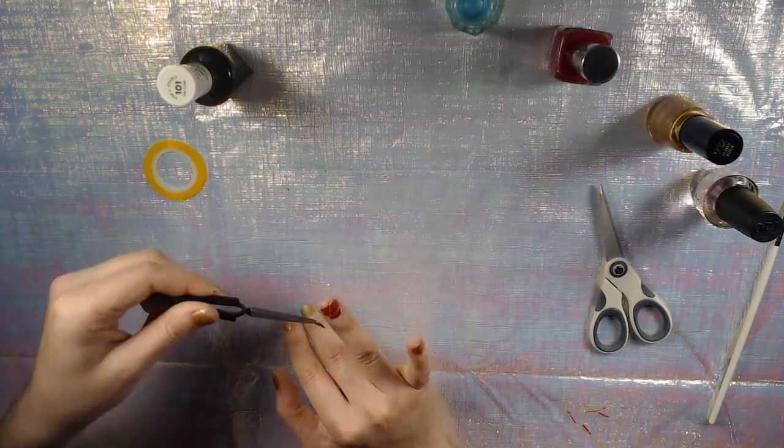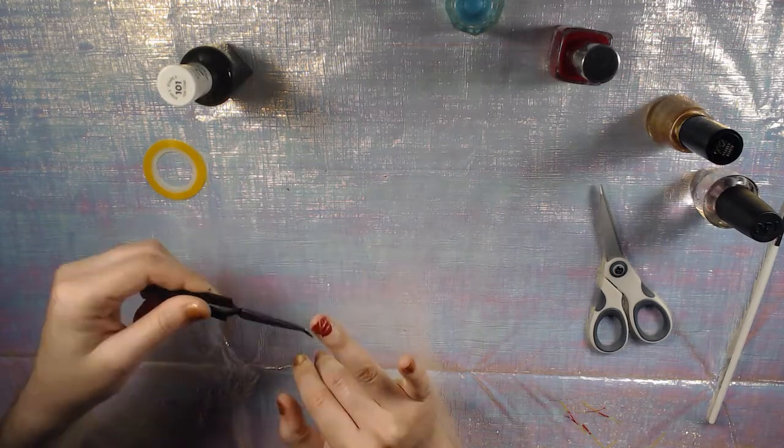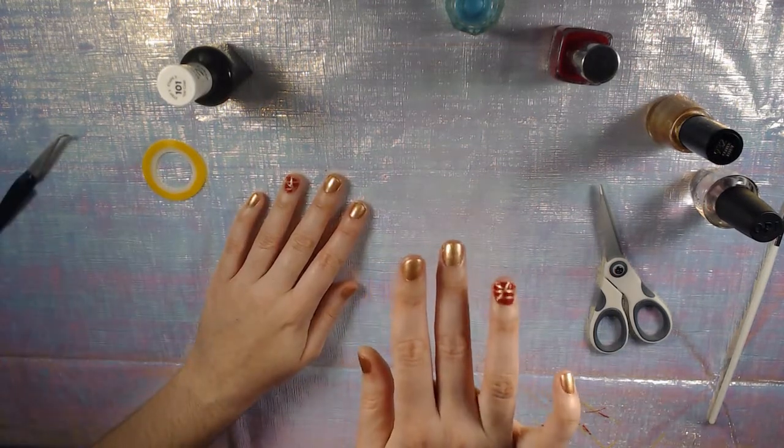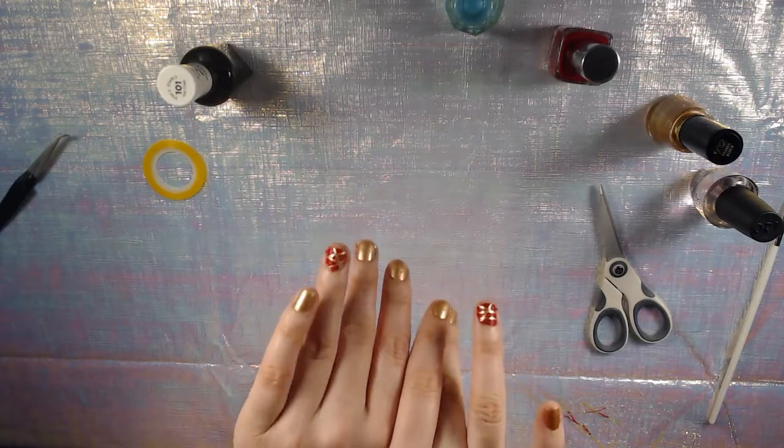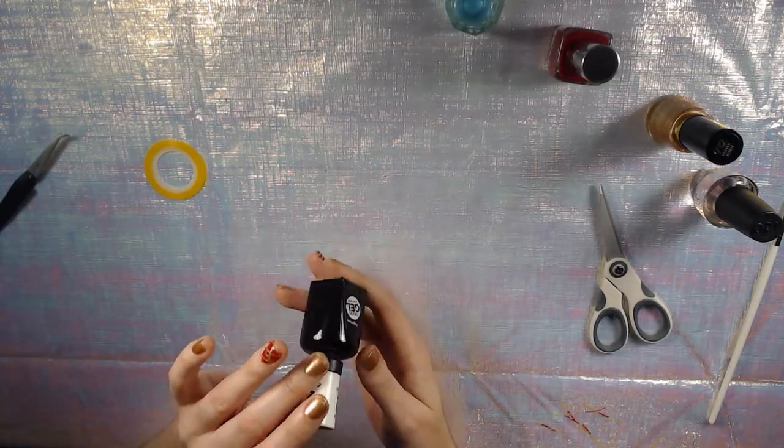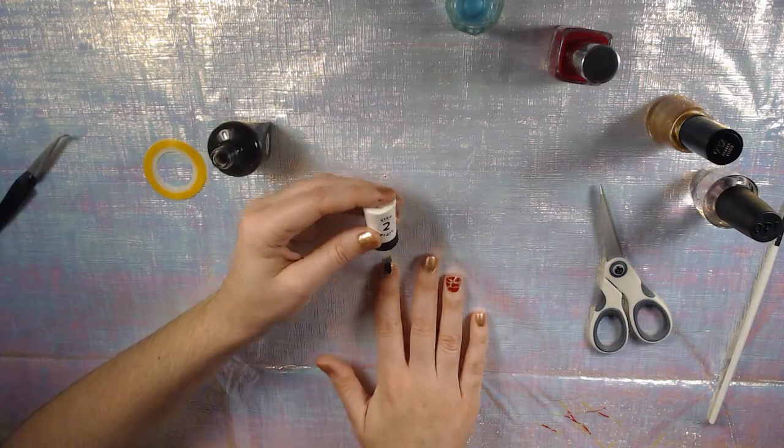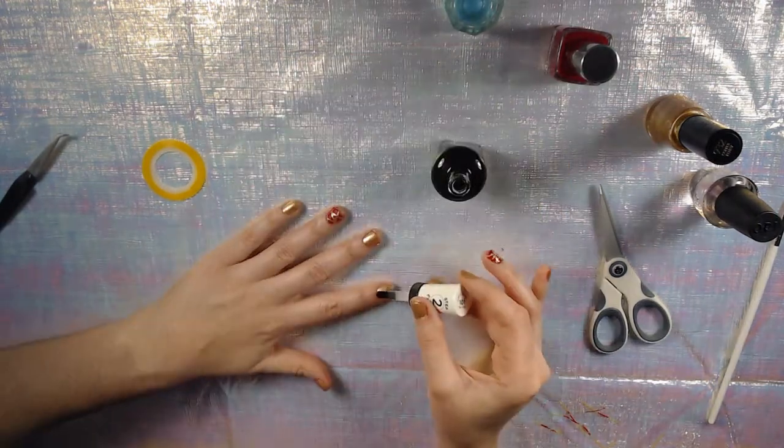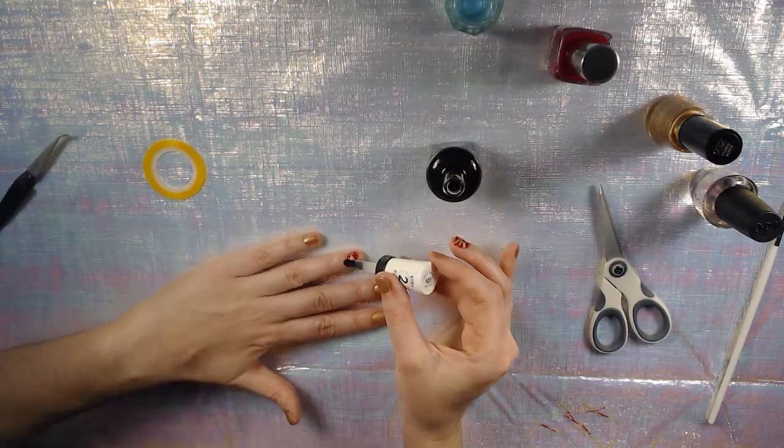I didn't really go for a distinct pattern here. I was just kind of throwing tape on in an order I could possibly remember so I could take it off in the right order. And of course, going in with my Sally Hansen Miracle Gel top coat, which is not a gel, it does not require a black light to cure, it's just a polish.